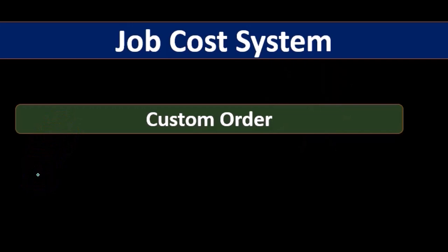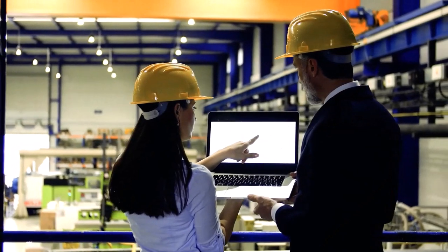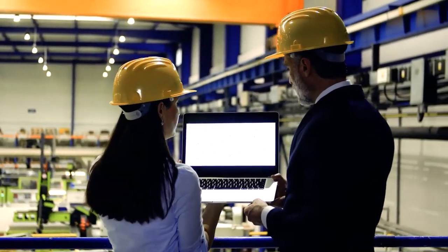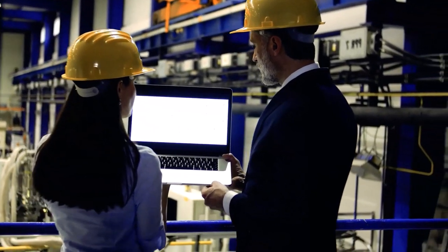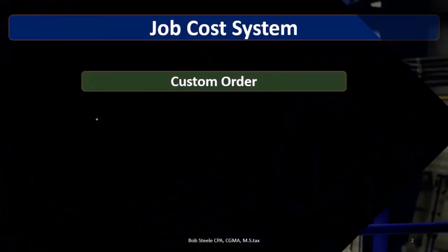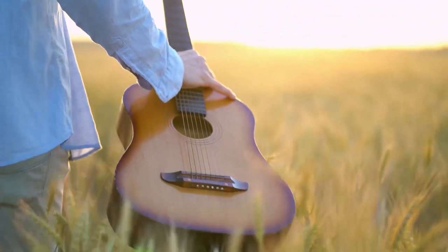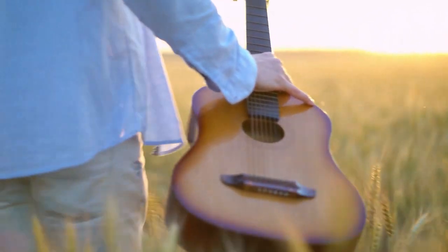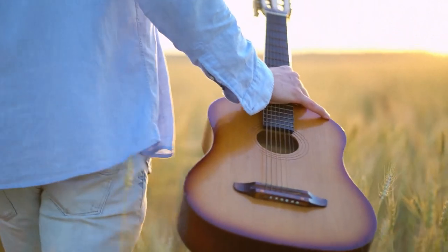I would use that first characteristic — custom orders — to think about the other characteristics as following from it. If we do some type of manufacturing business that's custom in some way, then the other characteristics follow from it. If we make custom guitars or do any kind of construction that's custom to whatever needs to be done, then we're typically going to be using a job cost system.